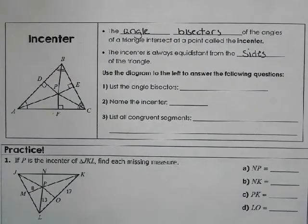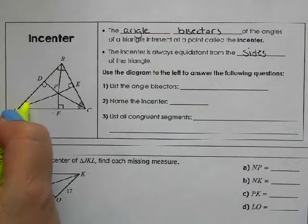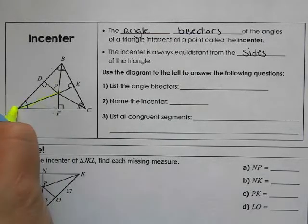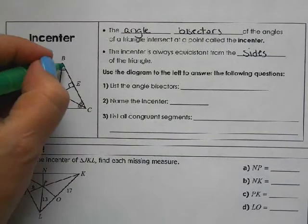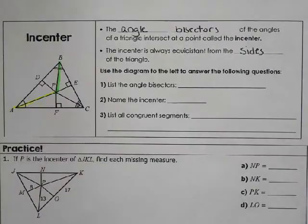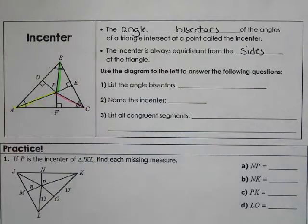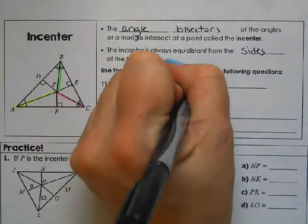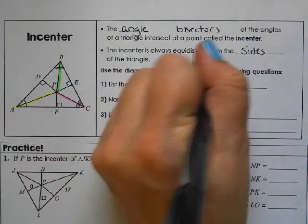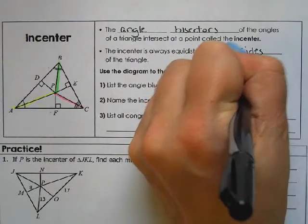So the angle bisectors, we start at a vertex of an angle. So the angle bisectors are different, so I'm going to highlight those in different colors. They're not equal to each other. So the angle bisectors are AP, CP, and BP.